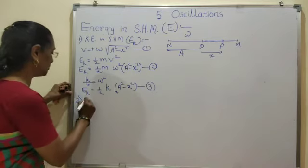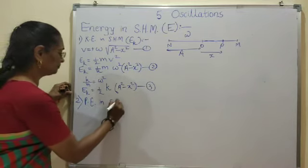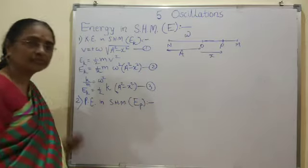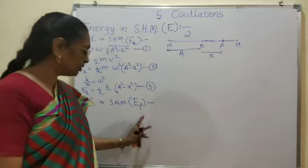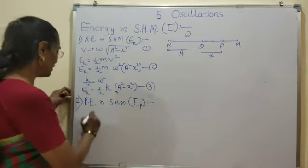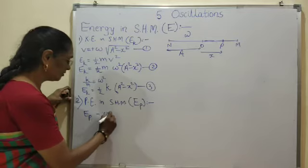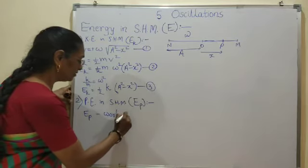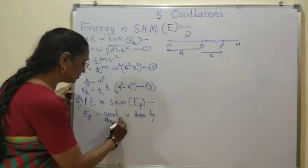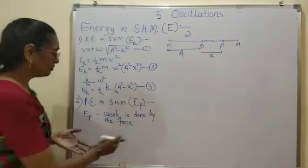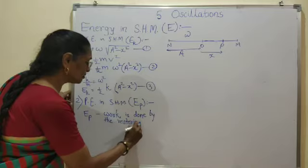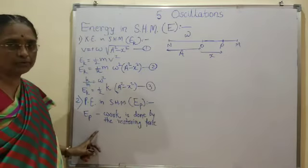Once we know the kinetic energy, we proceed for the potential energy in SHM. To derive the potential energy, we must discuss the work done. Potential energy exists when work is done by the force. The force in SHM is the restoring force. So work is done by the restoring force, and we have to derive this expression.